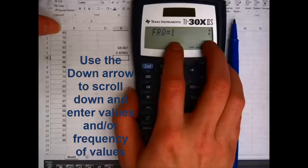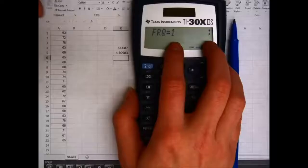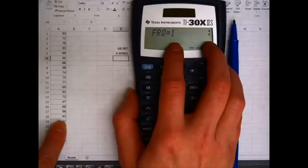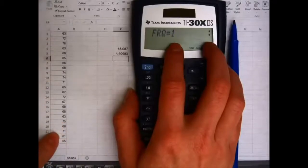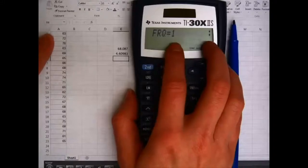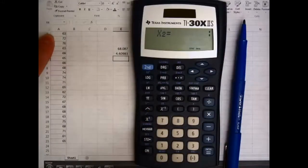Now, frequency – how often does 63 occur? Well, if I already had my data in a frequency table, I might just say 2 and be done with it. I'm not going to bother to make a frequency table here, so I'm going to skip over all the frequencies by arrowing past it.